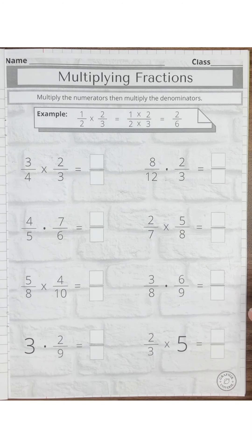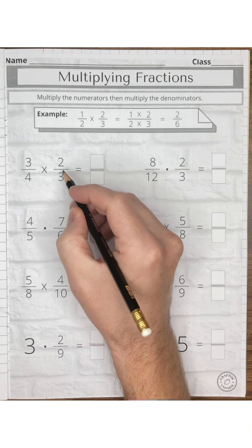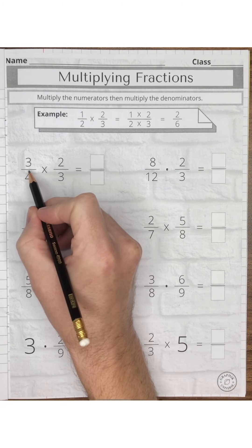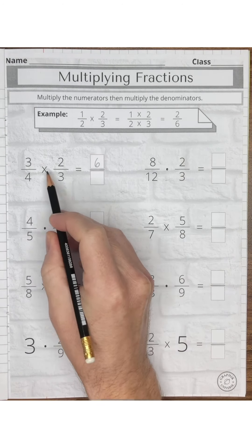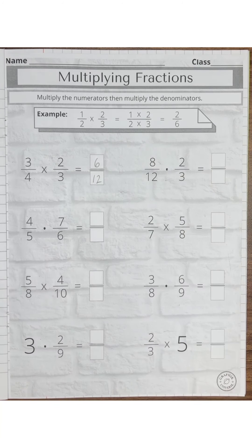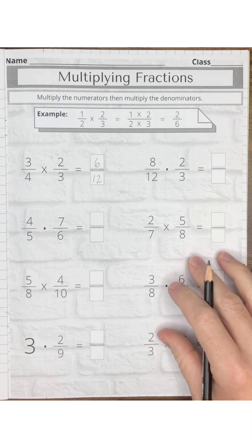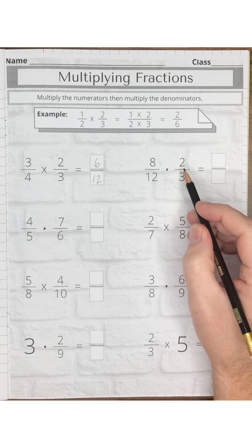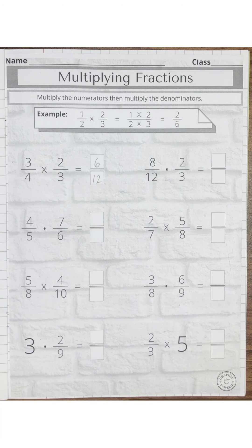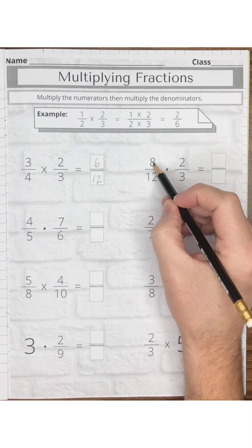Number 1: three-fourths times two-thirds. When you multiply the numerators, 3 times 2 equals 6, and 4 times 3 equals 12. Six-twelfths can be reduced or simplified — we'll do that at the end. Next problem: eight-twelfths times two-thirds. Another strategy is reducing the fraction first and then multiplying — we will also do that at the end.